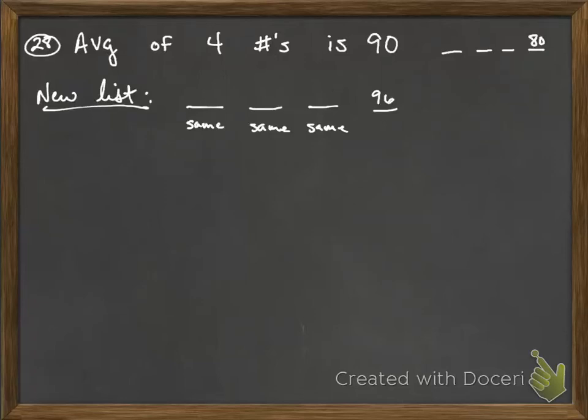Okay, so number 28 says that the average of four numbers, 1, 2, 3, and 4, is 90. It also tells us that a new list of numbers has the same first three numbers, but the last number is 96.